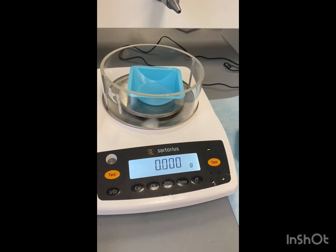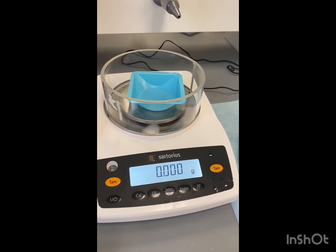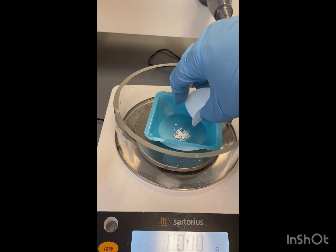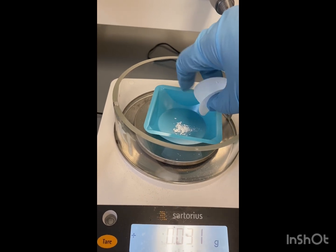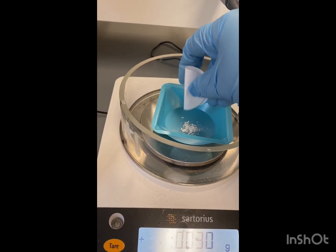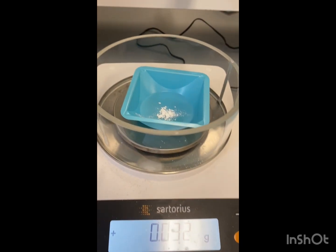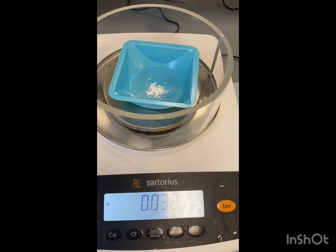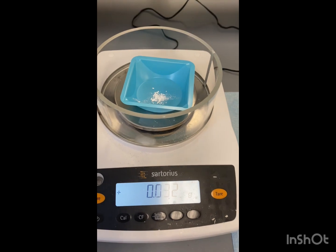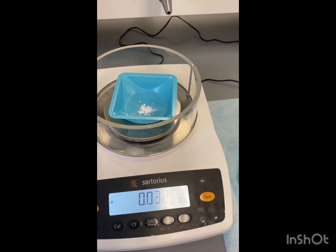So now we're going to weigh our S-phenylsuccinic acid that's been drying. Go ahead and weigh it. Alright, looks like we've got 0.032 grams. Alright, so we're going to take this and obtain a specific rotation.